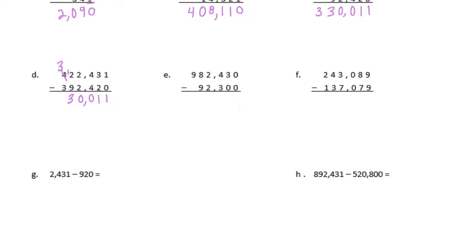E: 0 minus 0 is 0, 3 minus 0 is 3, 4 minus 3 is 1, 2 minus 2 is 0. 8 minus 9 we can't do, so I'm going to borrow — that becomes an 8, and this becomes 18. 18 minus 9 is 9, and 8 minus nothing is 8. So we have 890,130.